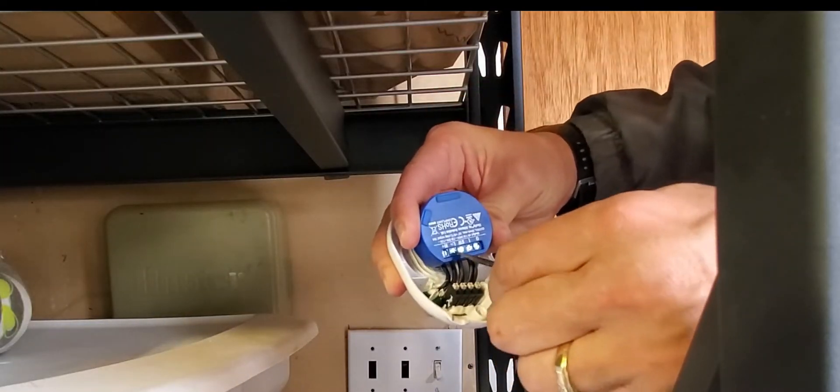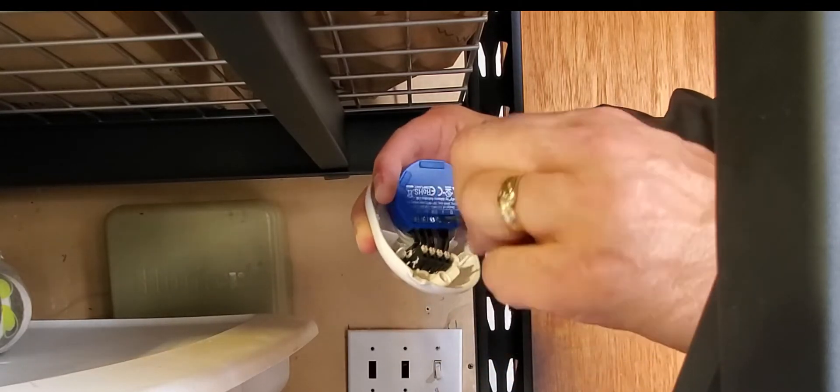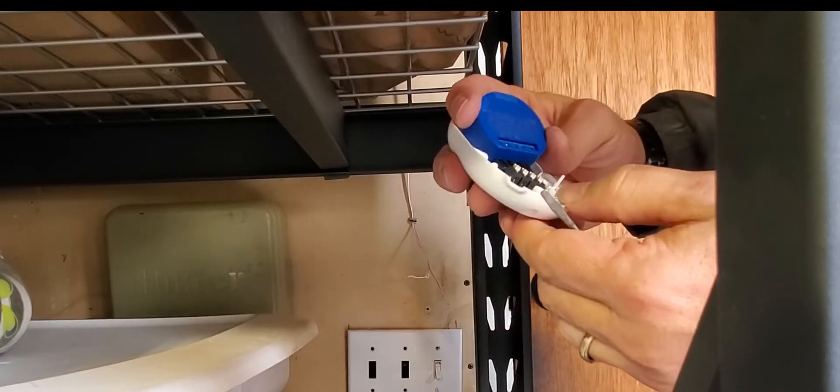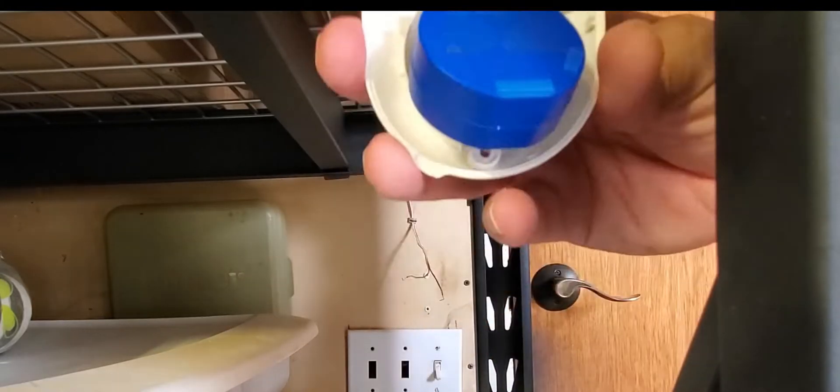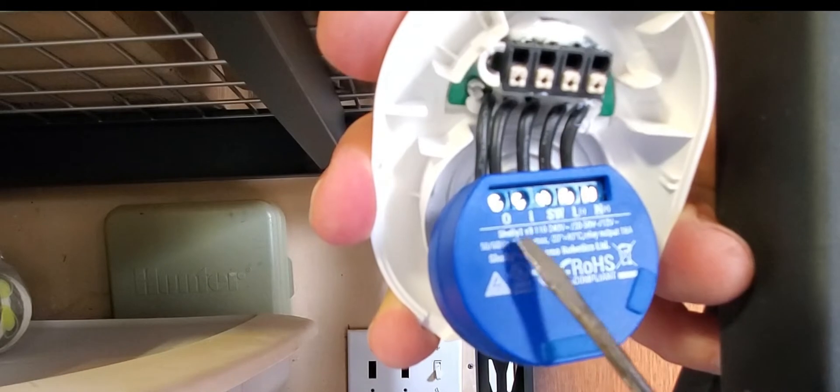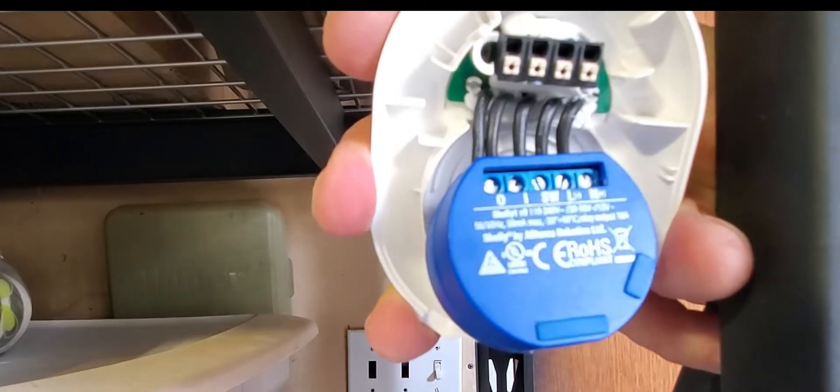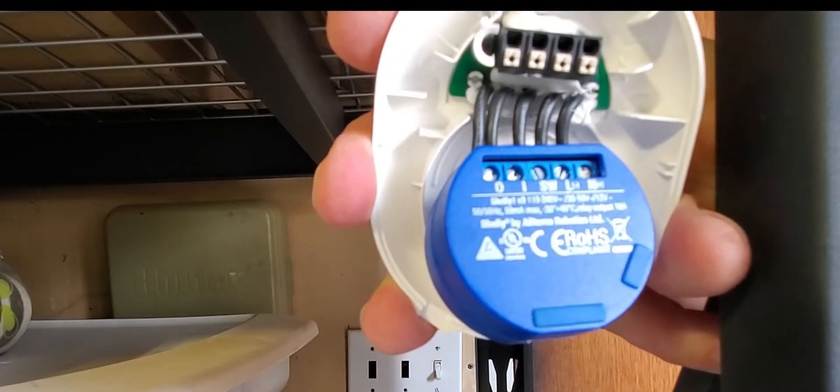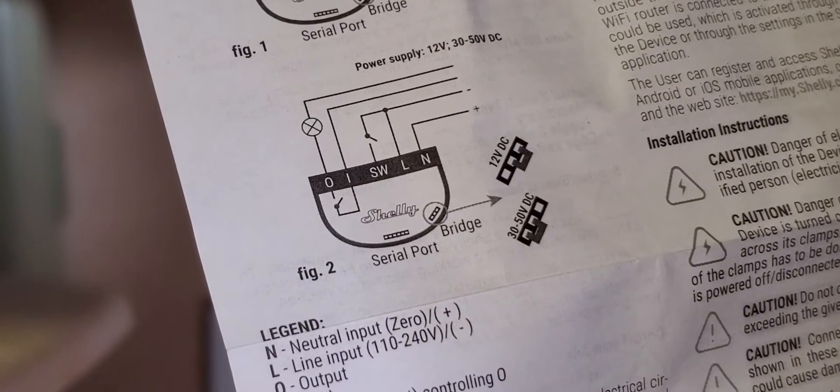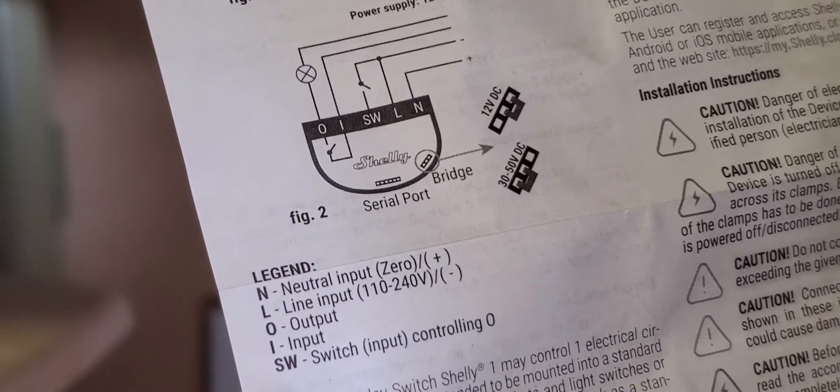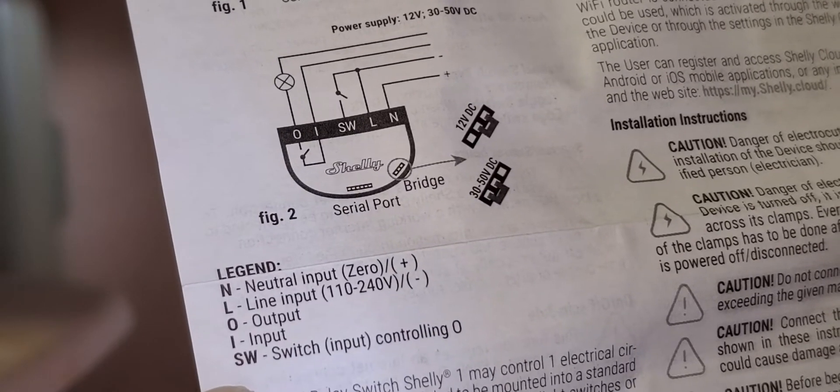I find that it's easier if you attach one wire to one side, tighten that first, and then tighten the wire on the opposite side second. That will keep the rest of the wires in place as you tighten all the screws down to make a solid connection. Here we have the output and input, the switch, the positive and negative terminals on the relay. Next step, it's always a good idea to look at the instructions. Here we see that those correspond to neutral input, line input, output input, and switch.